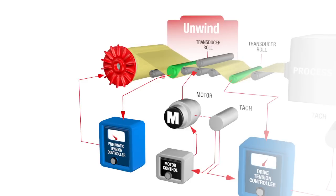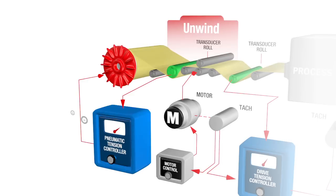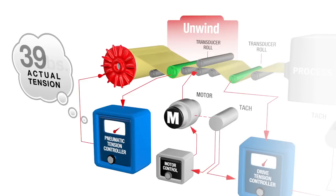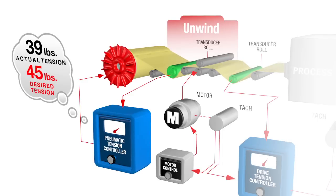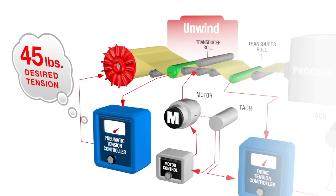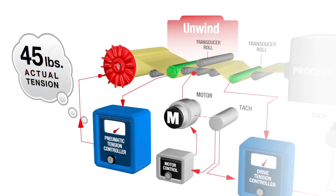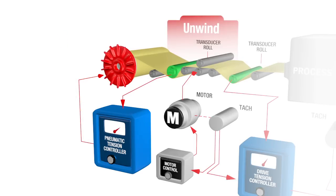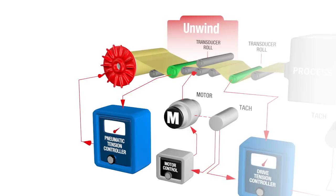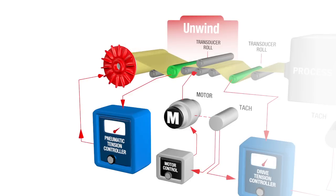During machine operation, the measurement signal from the tension transducers is input to an automatic tension controller. The controller compares the actual tension to a desired tension set point, input by the operator, and sends a compensated electric or pneumatic signal output to the control device. The output signal decreases as the material roll decreases in diameter to maintain constant tension going into the next tension zone.